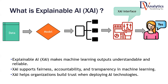So Explainable AI, in short known as XAI, is a kind of interface that will help us understand what are the influential factors. Explainable AI makes machine learning outputs understandable and reliable. From a broader point of view, it supports fairness, accountability, and transparency. We don't just want to make a claim that this is a predicted value and you just have to trust it — we want to make it transparent and be more accountable when building the models. XAI helps organizations build trust in deploying AI technologies.